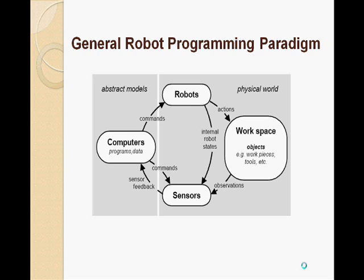The sensor continuously observes the environment in which the robot works, gets relevant signals, and sends them to the computer. When the sensor feedback is not sufficient, commands are given to the sensor for collecting more signals from the workspace. Internal robot states are also called by the sensor. When the necessary signals are received from the computer, it evaluates them and generates necessary commands for the robots, which then take necessary actions within the workspace.